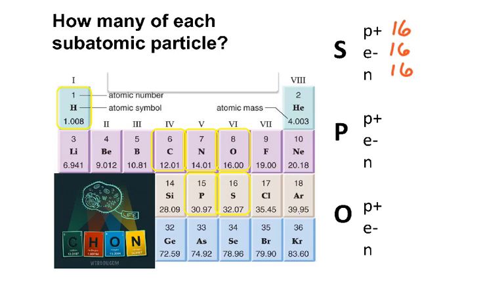Let's look at phosphorus. Phosphorus has an atomic number of 15, so that means 15 protons and 15 electrons. It has a mass that rounds to 31. So I take that mass — 31 — subtract the number of protons, and I get 16 neutrons. And for oxygen: 8 protons, which means 8 electrons. Mass is 16, so I don't have to do any rounding. 16 minus 8 is 8 neutrons.